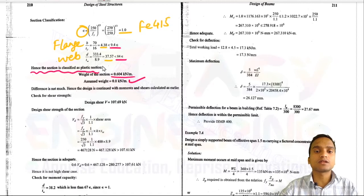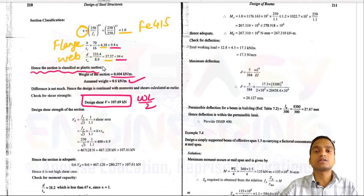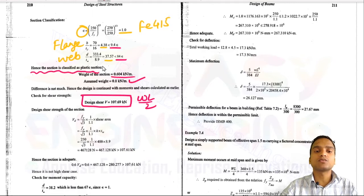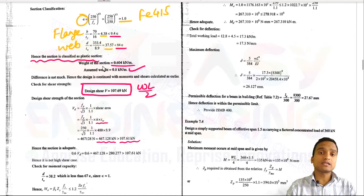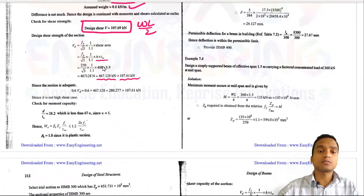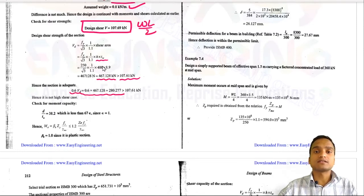For shear strength, design shear from external load was 107.7 kN. Shear capacity VD = (FY / √3) × (h × tw) / 1.1, which is greater than the design shear. Checking 0.6 VD, it is greater than 107.7 kN, confirming this is a low shear case.